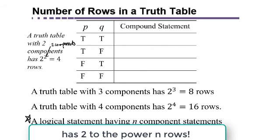So a logical statement having n component statements will have two to the n rows in its truth table. You should know this formula because although I won't ask you to set up a truth table that's enormous, I might ask you how many rows would be in it. So if I said there are six components in the statement, how many rows would be in its truth table, you'd say two to the sixth and figure out what that number is, which is 64.